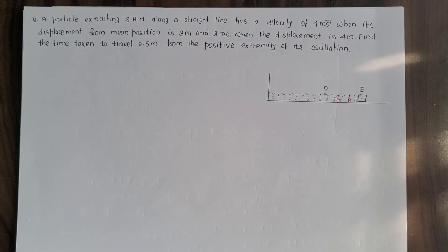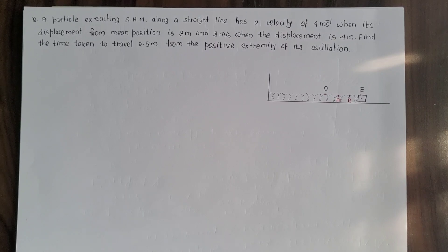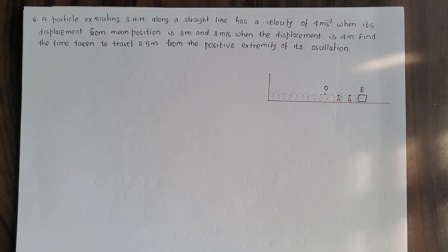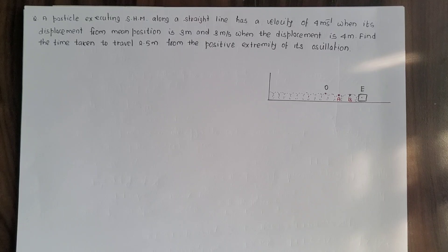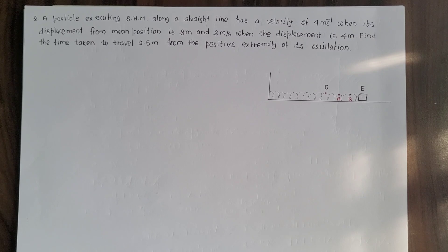Hello students, this video question is from global physics, simple harmonic motion. A particle executing SHM along a straight line has a velocity of 4 meter per second when its displacement from the mean position is 3 meter, and 3 meter per second when the displacement is 4 meter. Find the time taken to travel 2.5 meter from the positive extremity of its oscillation.